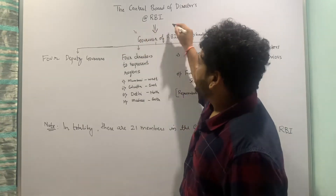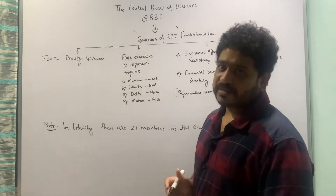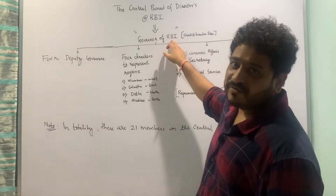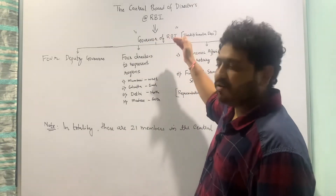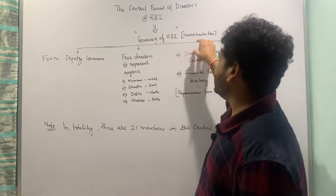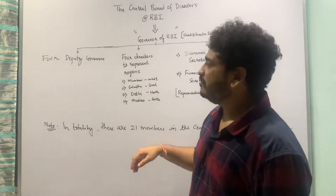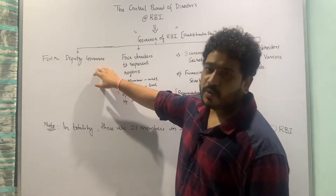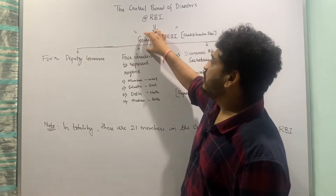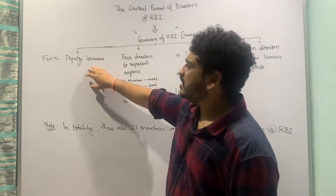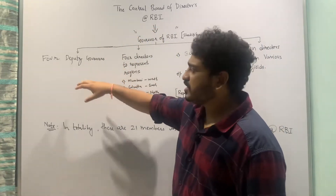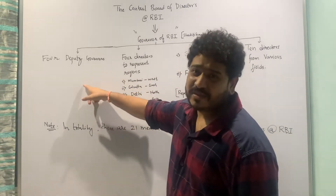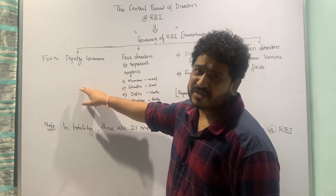RBI consists of 21 members and the topmost member is known as the Governor of the Reserve Bank of India. Currently it is Shakti Kantha Das who is the Governor. Then there are four Deputy Governors who are there to assist the Governor. These Deputy Governors can be from the Executive Board of the Reserve Bank, or there will be one member who is an economist and one member who can be an IAS officer as well.